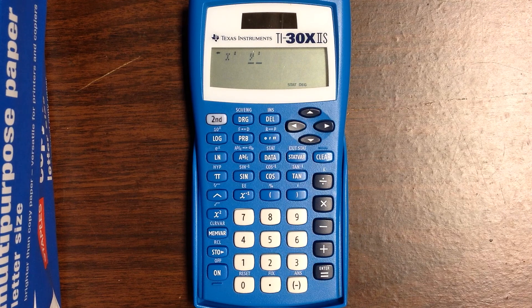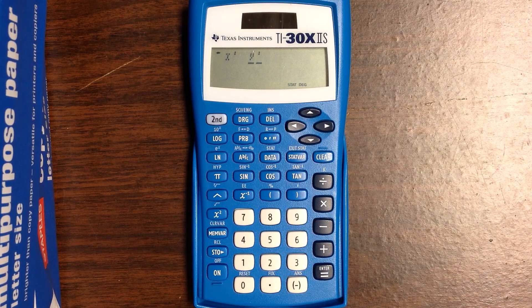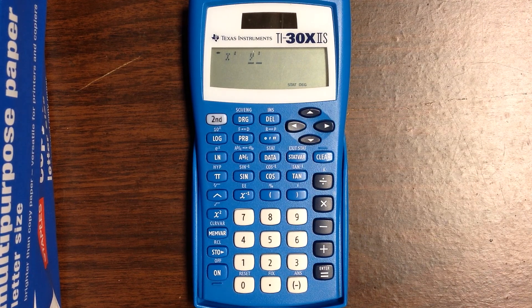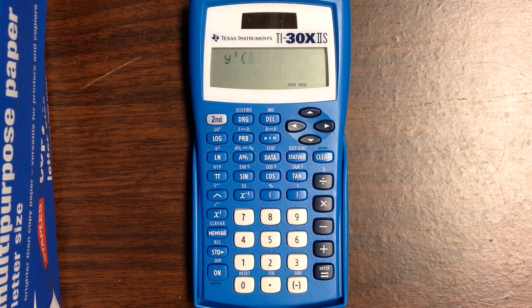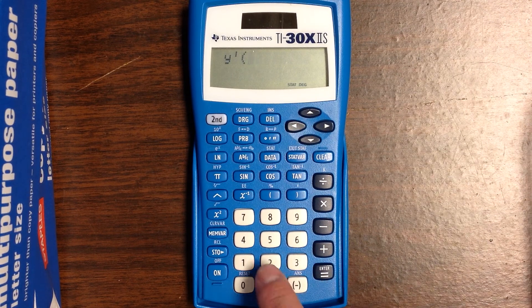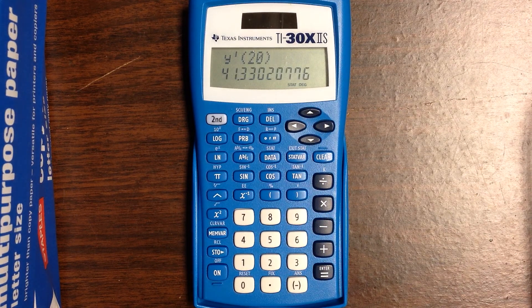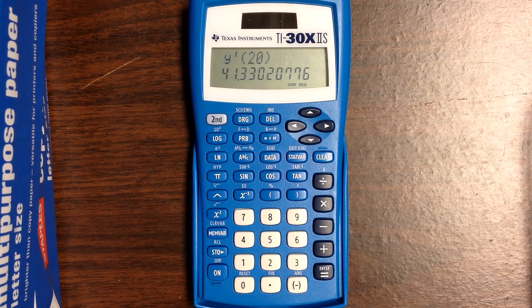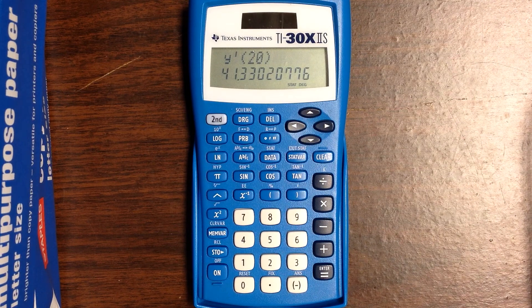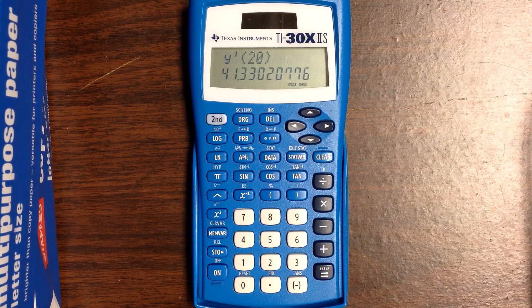Let's say I want to know the predicted number of tapes sold if there were 20 million households. Press equals, it will give me Y prime, then input 20 for X. That gives me 41.33, which means if there were 20 million households with a VCR, we would predict that 41.33 million tapes would be sold.